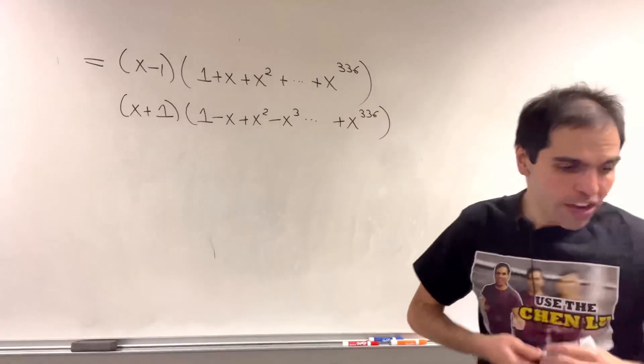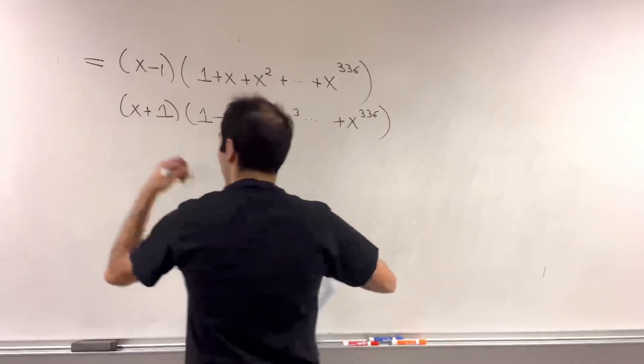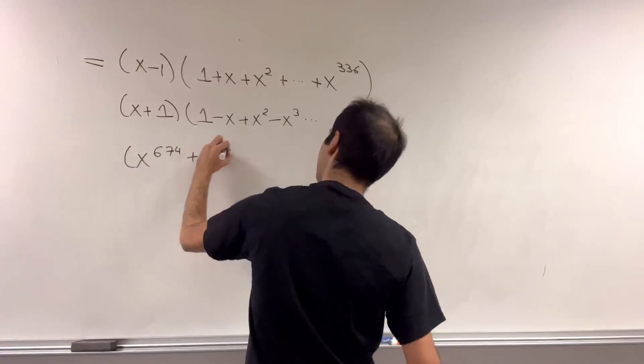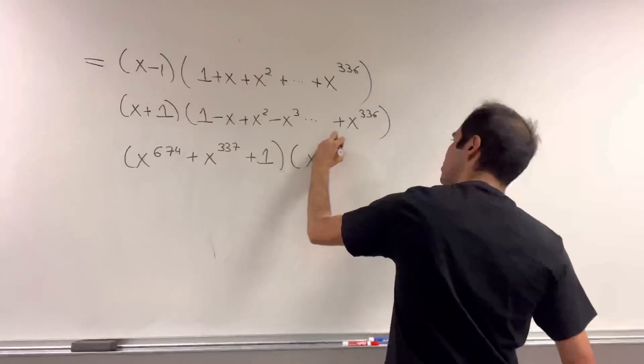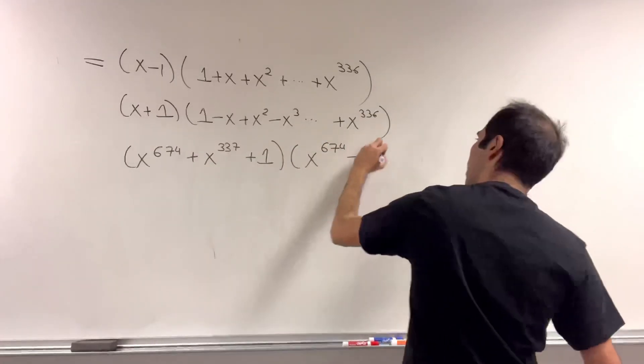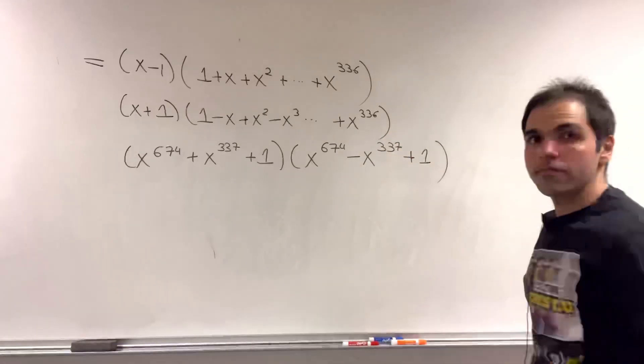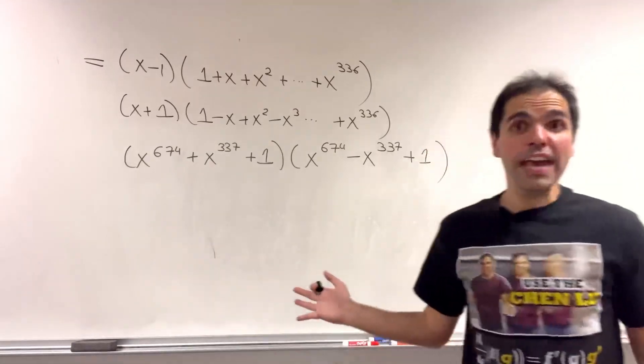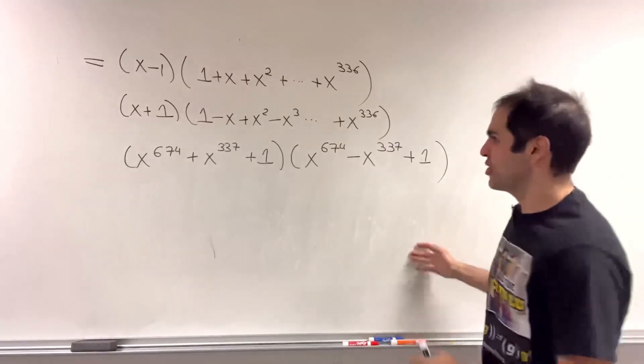And finally, we have those two other terms, which are x to the 674 plus x to the 337 plus 1 times x to the 337 plus 1. And you might say, can we do better? You betcha, because this is Dr. Piem's show.